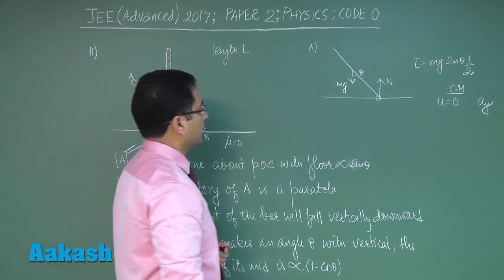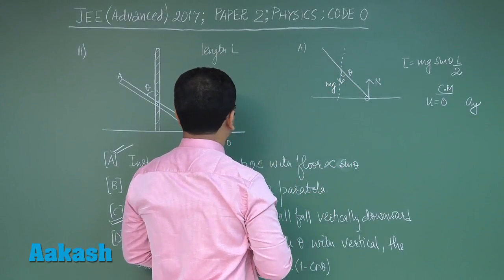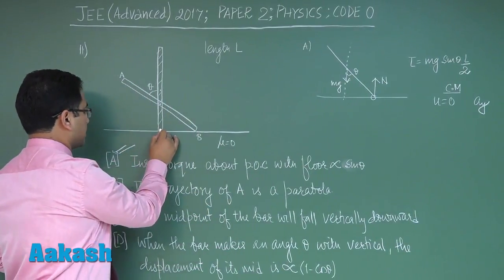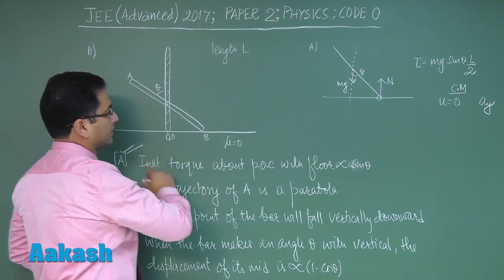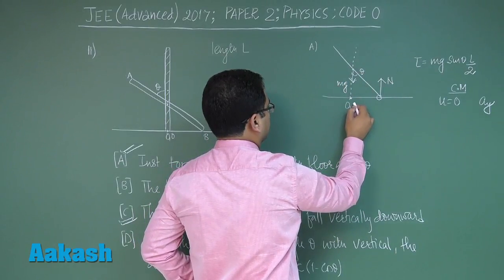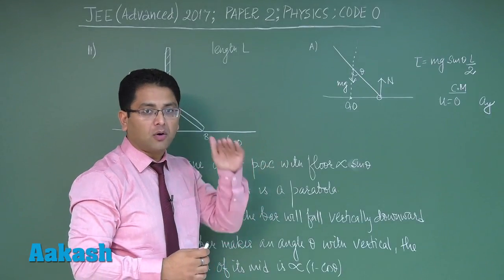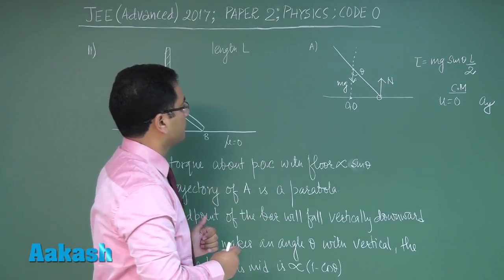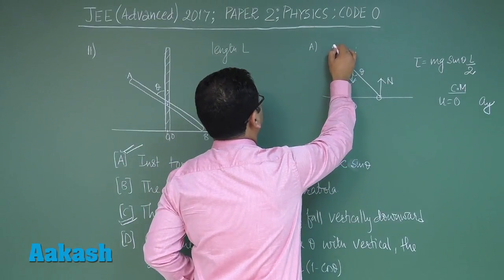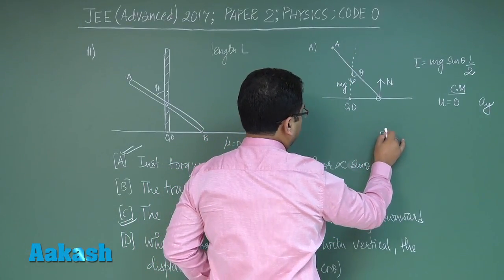The initial position of the rod is taken as the origin. The center of mass will always remain above the origin because it falls only in the vertical direction. Now let's try to find the coordinates of point A and verify option B.